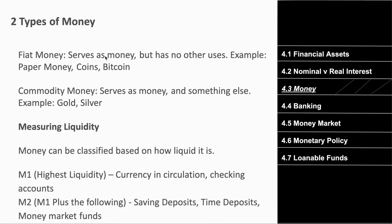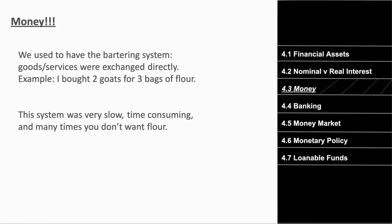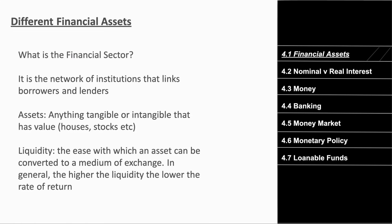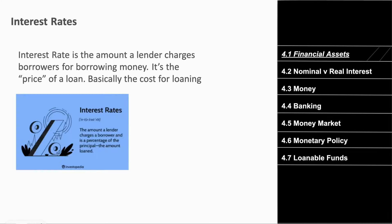There are two main types of money. Fiat money serves as money but has no other uses — paper money, coins, and bitcoin are all fiat money, used only as a medium of exchange. Commodity money serves as money but also serves as something else — that includes bags of flour, goats, gold, or silver.